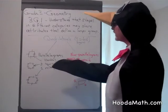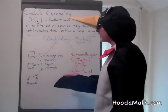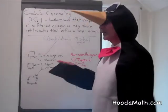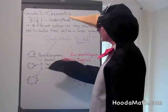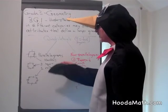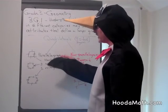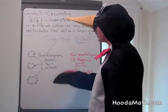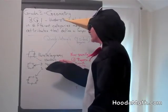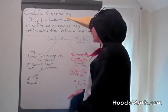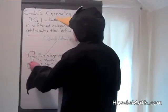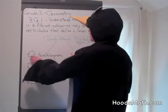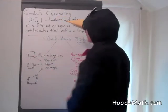Parallelograms — I'm going to give you three subcategories under the category parallelogram. There are things called rhombuses. A rhombus has four equal sides, and opposite sides are parallel.